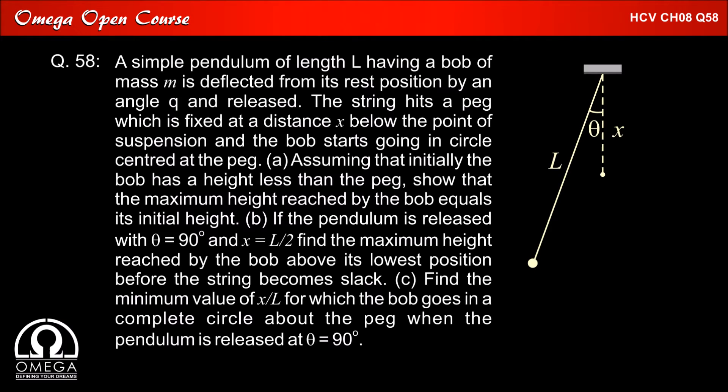A simple pendulum of length L having a bob of mass m is deflected from its rest position by an angle theta and is released. The string hits a peg which is fixed at a distance x below the point of suspension and the bob starts going in a circle centered at the peg.